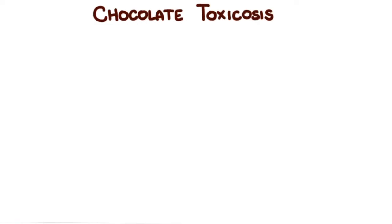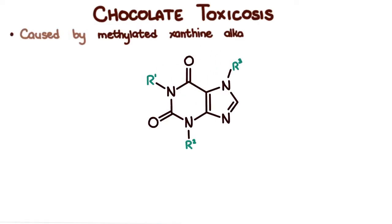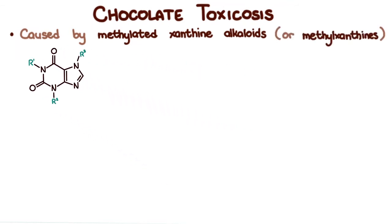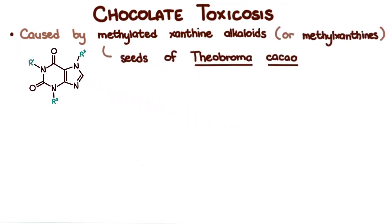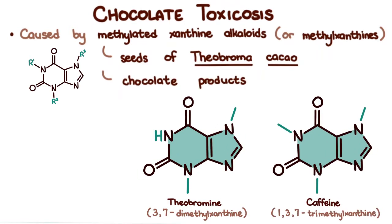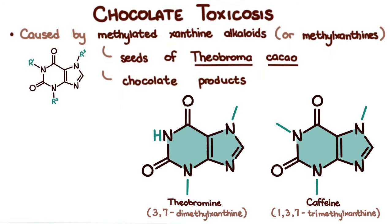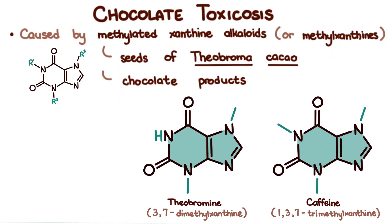Chocolate toxicosis is caused by methylated xanthine alkaloids, or methyl xanthines, present in the seeds of the Theobroma cacao plant and the chocolate products we make from it — primarily theobromine and caffeine. Often, chocolate products contain both of these in varying amounts. Generally, darker chocolates contain more methyl xanthines than milk or white chocolates.